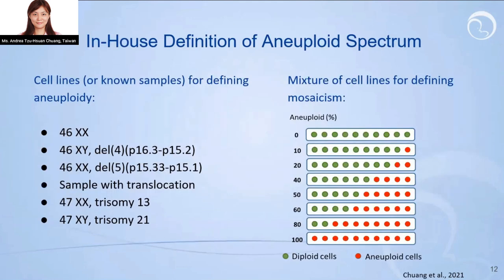How can we establish mosaic calling criteria in-house? We used cell lines and clinical samples with known karyotypes, mixing them to simulate actual mosaic samples. The outcomes of the CCS testing allowed us to define threshold and cutoff values for the mosaic calling system across samples with different karyotypings. That is how we established our calling criteria for the mosaic system.